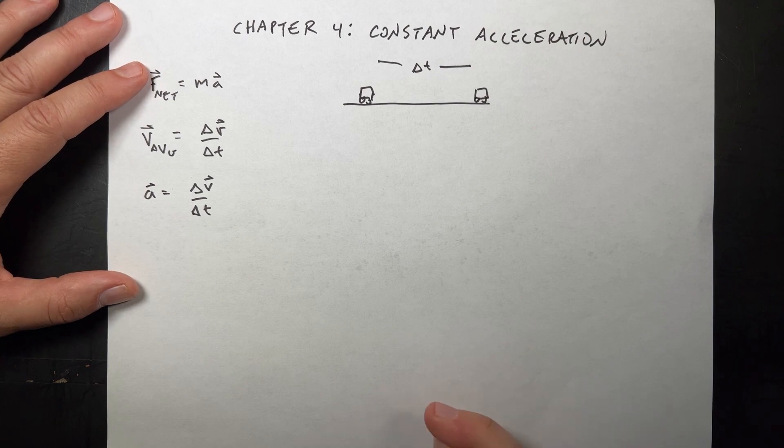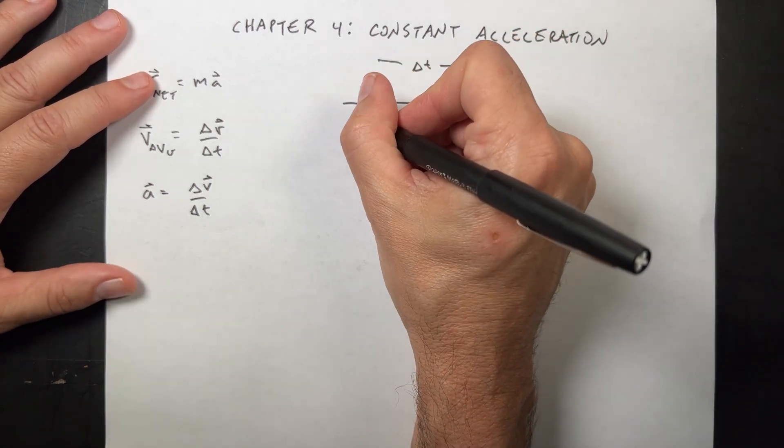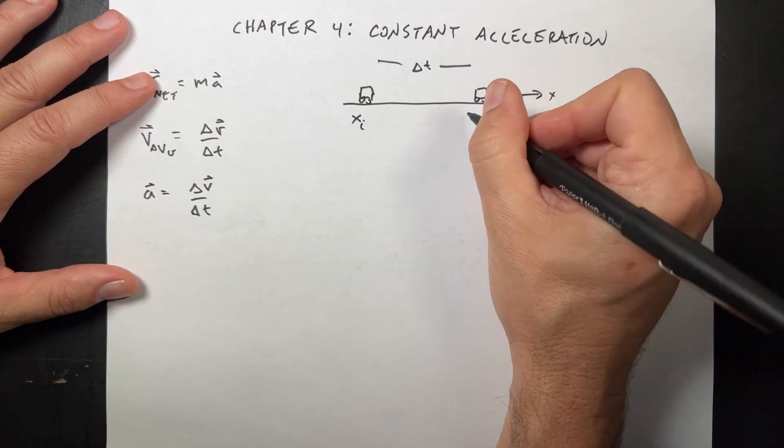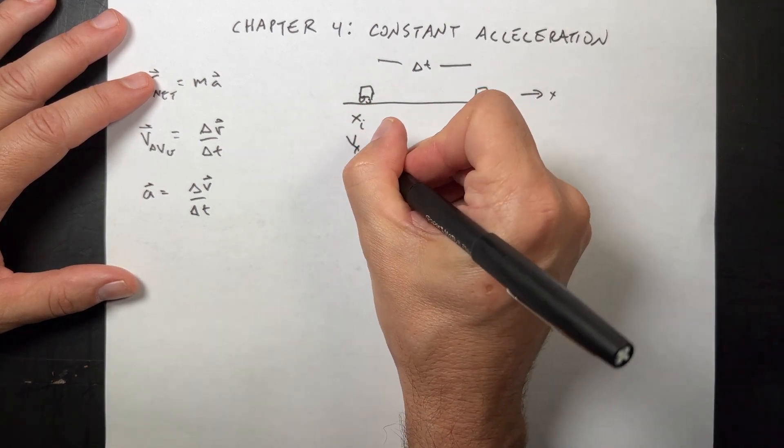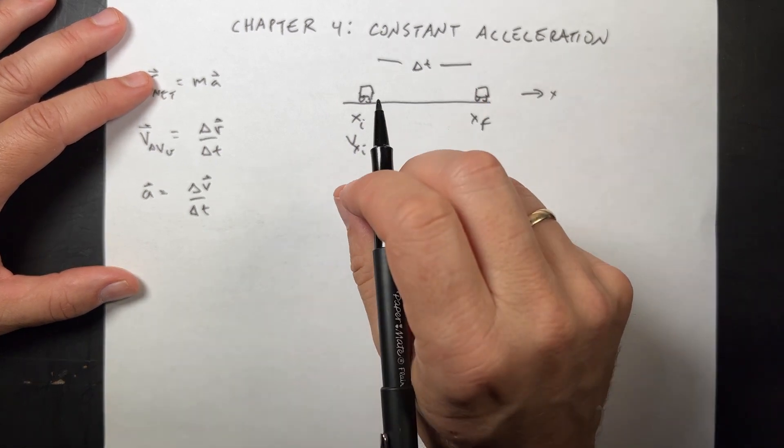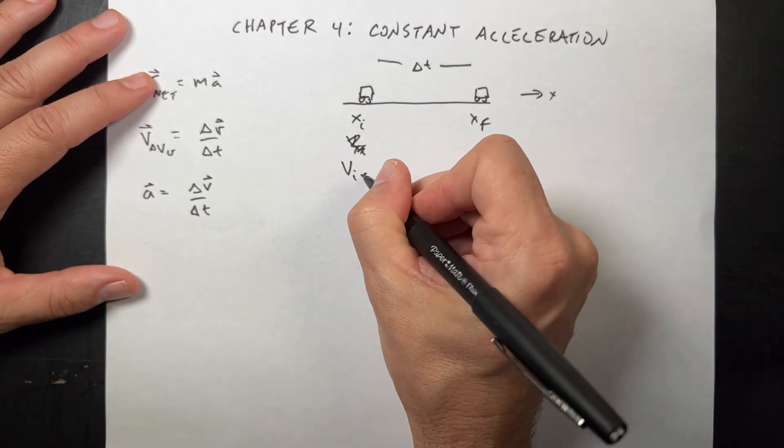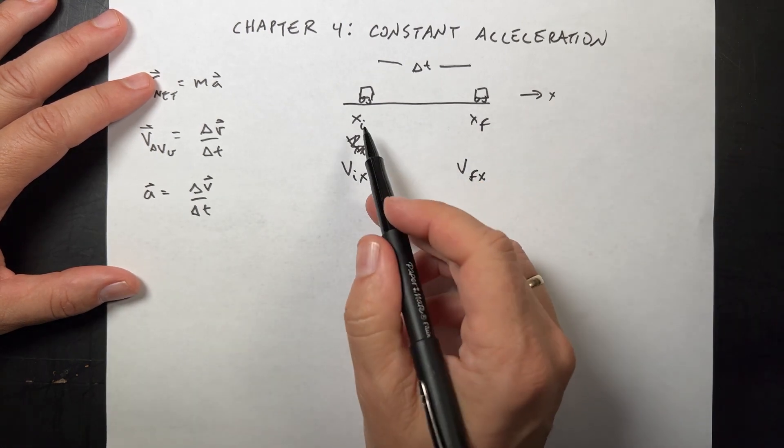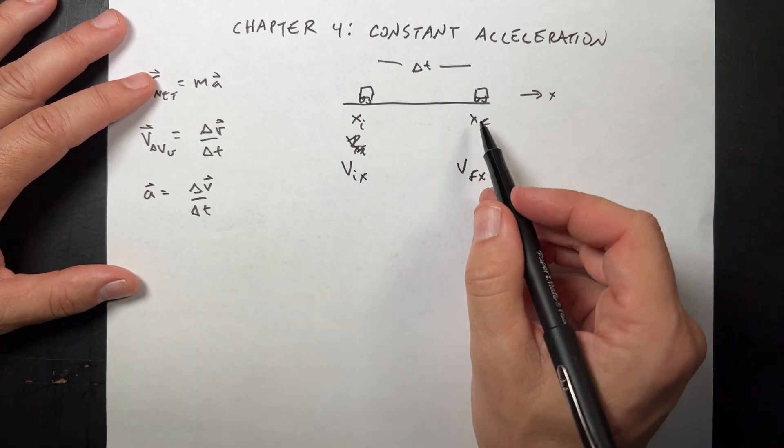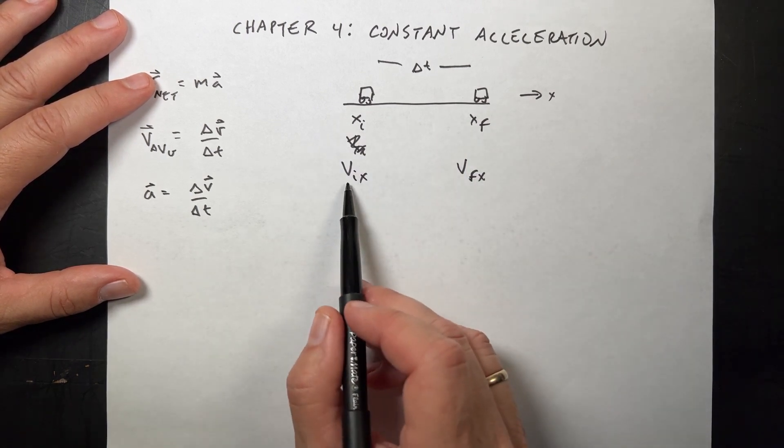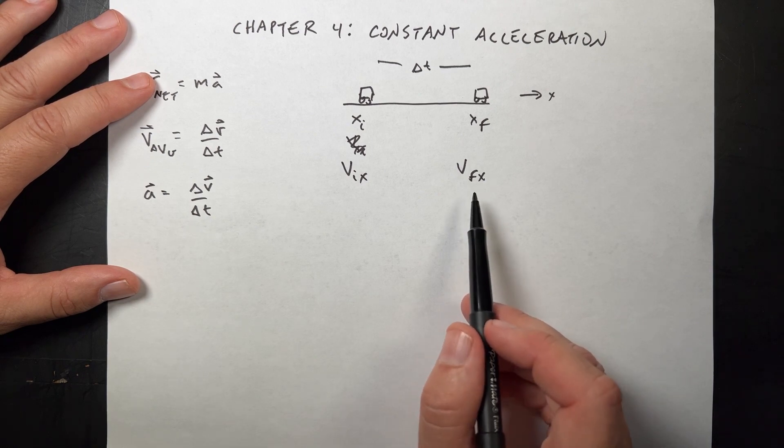So, the book uses this notation, X, I, and F. So it will say this, in just the X direction. XI, XF. VIX, VFX. So this is the I stands for initial, F stands for final. So this is the initial position, the final position. This is the initial X velocity. That's the final X velocity.